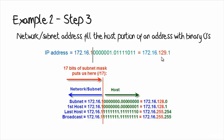In summary: host 172.16.129.1 is on subnet 172.16.128.0. The first host in the subnet is 172.16.128.1. The last host is 172.16.255.254. And the broadcast address is 172.16.255.255. Those three examples demonstrate the binary method for working out the subnet, first host, last host, and broadcast address when given a host IP address and its subnet mask.